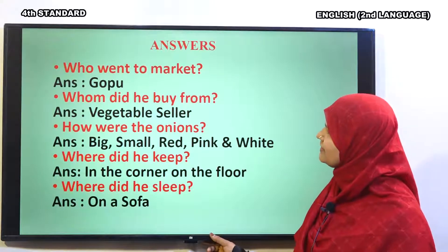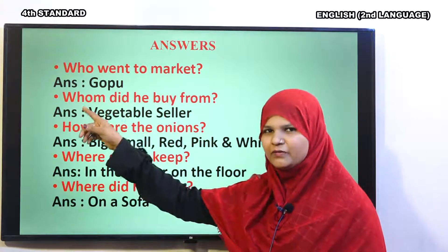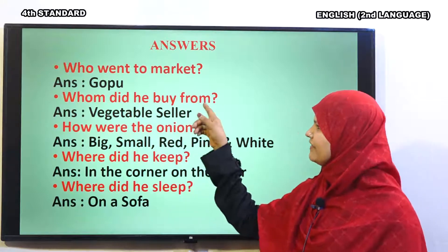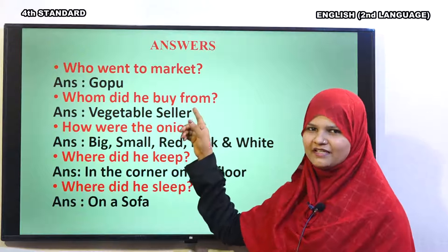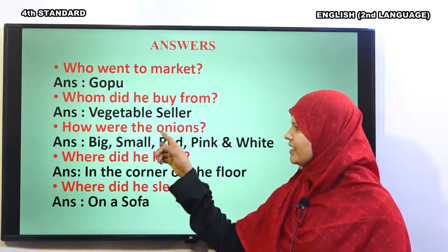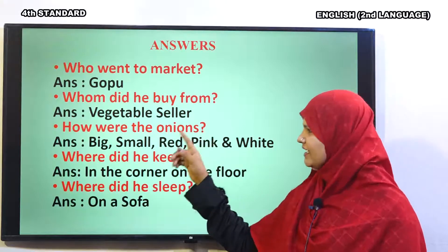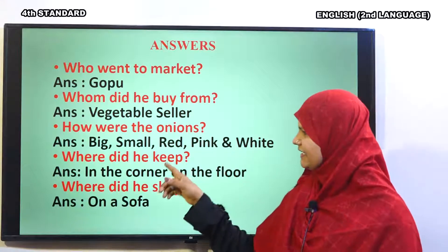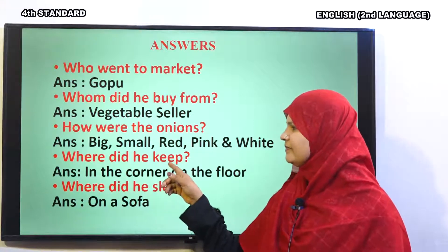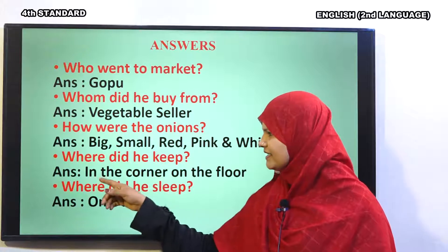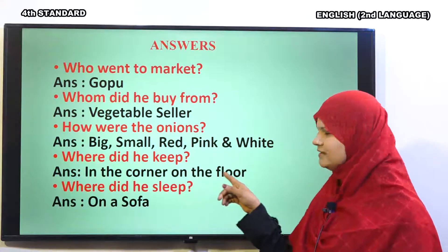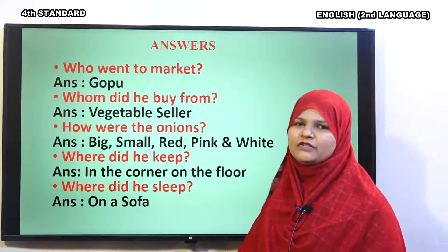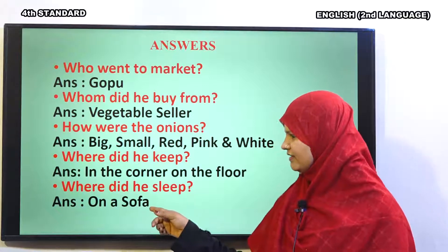So, dear children, who went to the market? Very good. Gopu went to the market, as you have answered earlier. Whom did he buy from? He bought from a vegetable seller. Very good. How were the onions? The onions were big, small, red, pink and white. Next, where did he keep the onions? He kept them in the corner on the floor. Next, where did he sleep? There was nobody in the home, so the servant slept on the sofa.